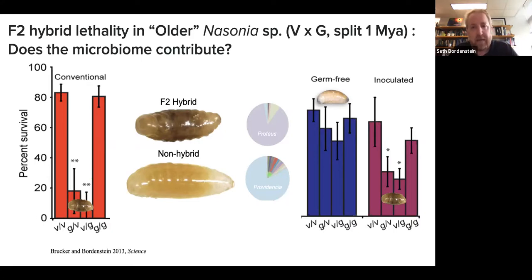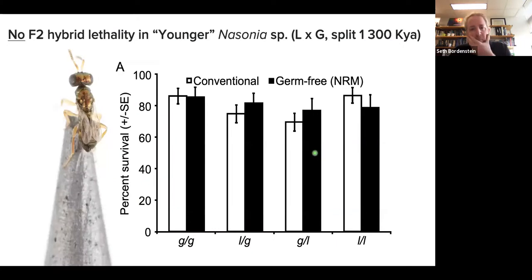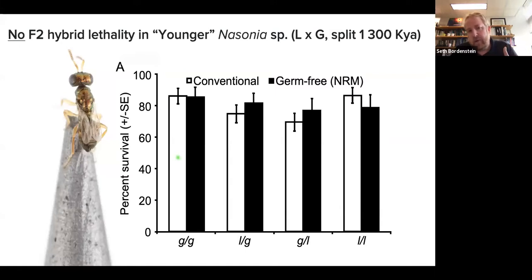The microbiome has a say in causing F2 hybrid inviability, with a possible link between the melanization response and the role of microbes assisting in that response. As a control, the younger species pair, diverged about 400,000 years ago, doesn't show any F2 hybrid inviability — whether conventionally reared or germ-free reared, viability of F2 hybrid males is quite strong, and there's no influence of the microbiome.